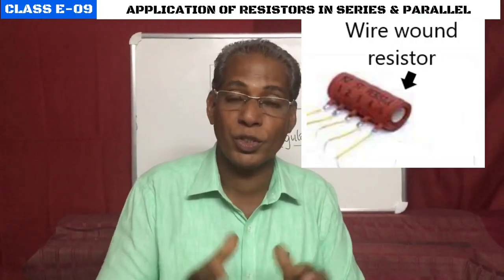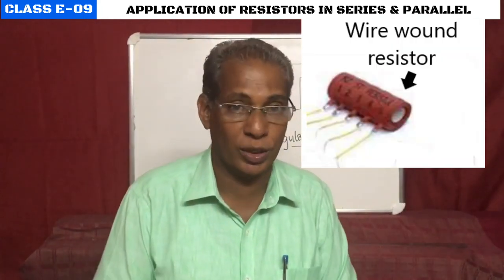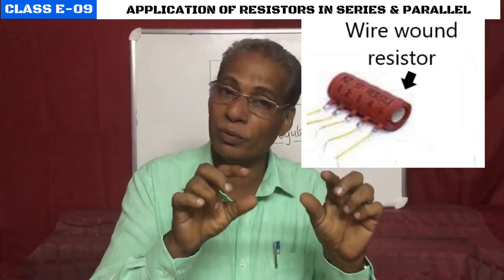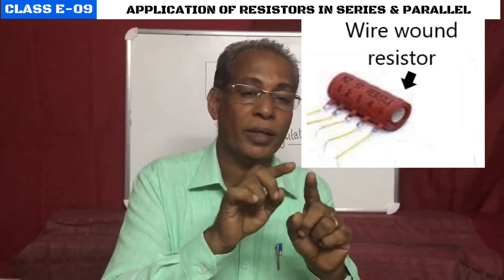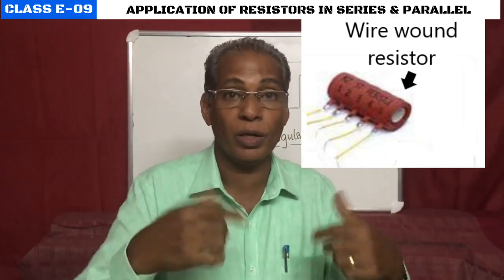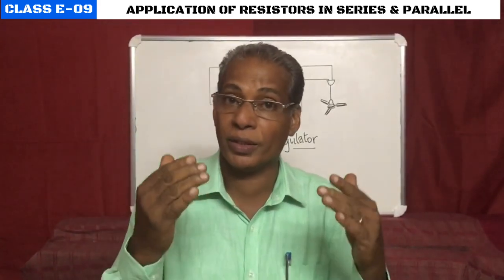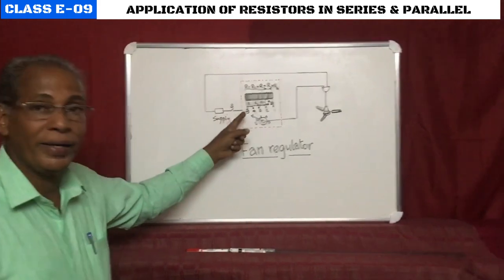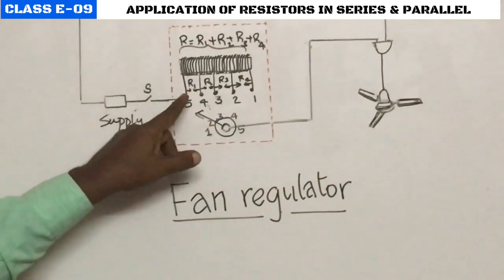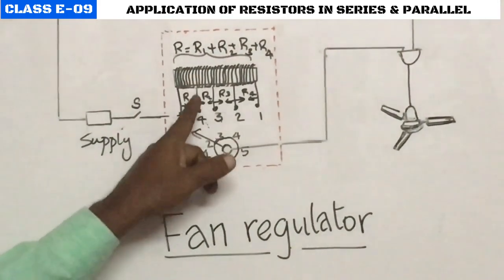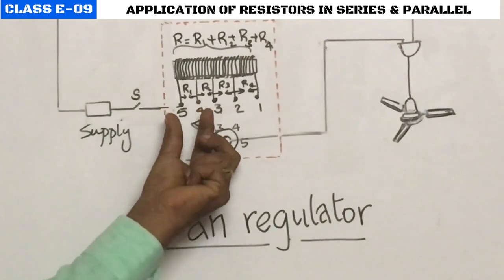In a fan regulator we use a wire-wound resistor, which is yet another type of resistor. Here we use a resistant wire wound on an insulating core. The length of wire and the resistance are directly proportional — we already studied this last year. Factors affecting resistance: if length is more, resistance will be more. Here we have windings from one point connected into the circuit.